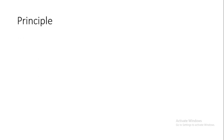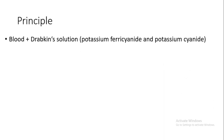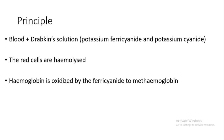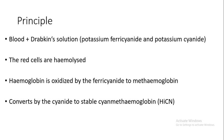Principle: Blood is diluted with Drabkin's solution containing potassium ferricyanide and potassium cyanide. The red cells are hemolyzed and free the hemoglobin. Hemoglobin oxidizes into methemoglobin by the potassium ferricyanide. Methemoglobin converts to the stable cyanmethemoglobin by potassium cyanide.